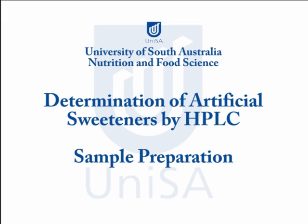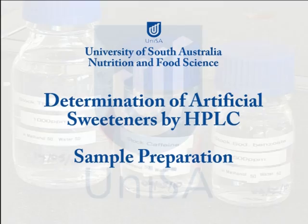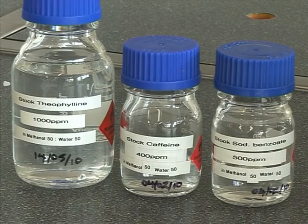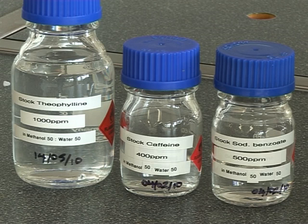Determination of Artificial Sweeteners by HPLC. For sample preparation, you're provided with the following stock solutions. From these stock solutions, you'll be required to make a dilution from each standard solution.